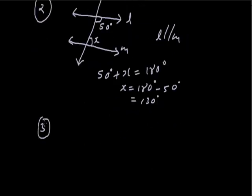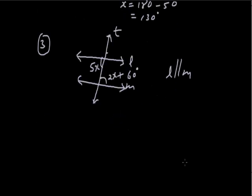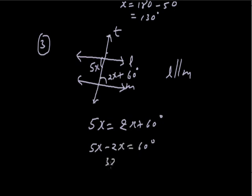In the next problem, two parallel lines L and M are cut by a transversal. One angle is 5x and the other is 2x + 60°. From the figure, 5x and 2x + 60° form alternate interior angles because of the Z-shape. Since the lines are parallel, alternate interior angles are equal: 5x = 2x + 60°. Solving: 3x = 60°, so x = 20°.